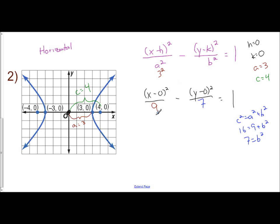And then simplify it. You don't show minus 0. So it's just x squared over 9. Again, we have minus 0. So let's just put down y squared over 7 equals 1. And there is our standard form.